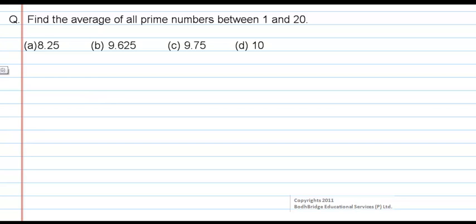We need the average of all prime numbers between 1 and 20. So let us write the prime numbers between 1 and 20.